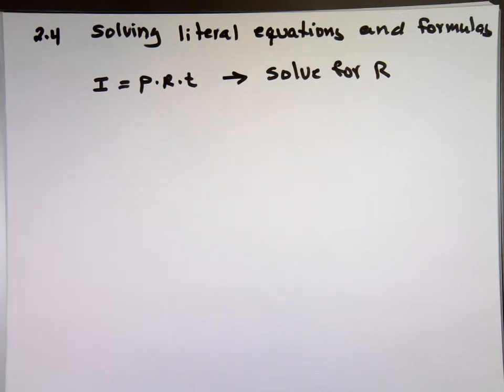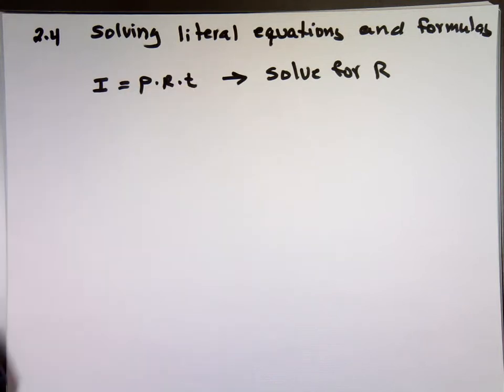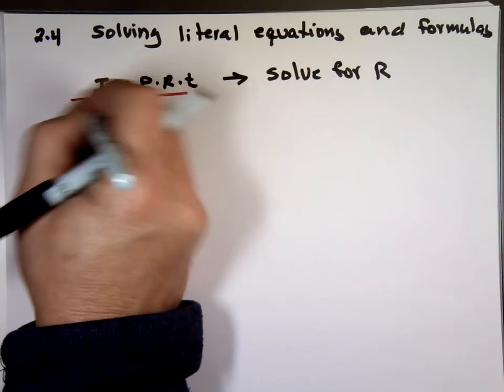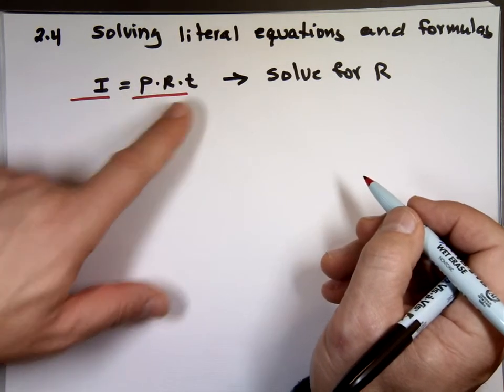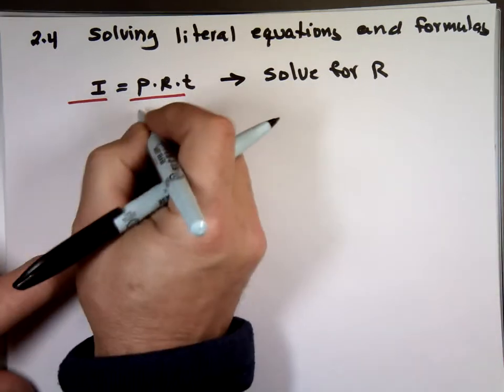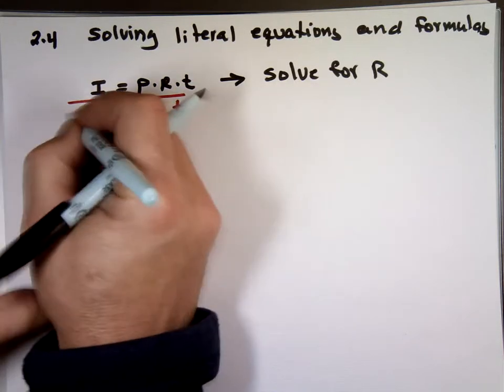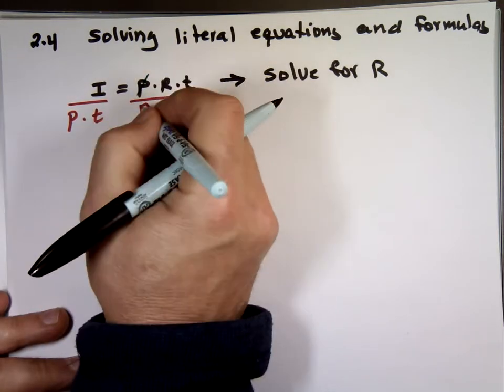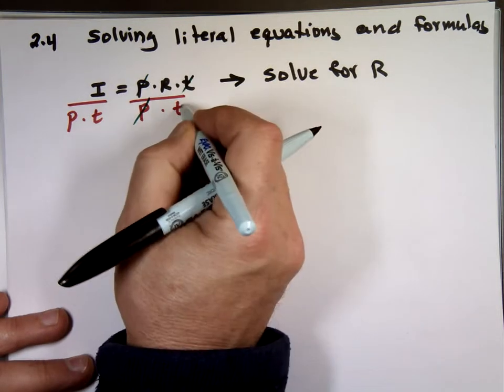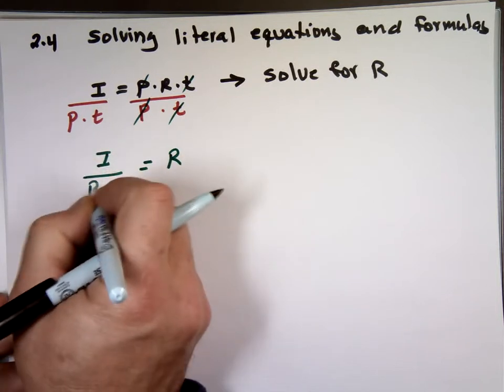How would I solve that for R? Notice you have P times R times T, so you have a multiplication. The opposite to multiplication is always division. So we're going to divide both sides. What do we divide by? If I'm looking for R, that means I have to cancel the P and the T. And the only way to cancel them is if I divide by them. So if I divide by P times T on this side, divide by P times T on that side. Why are we dividing by P and T? So this P will cancel the P, this T will cancel the T. And what's left? R equals interest over principle times time.